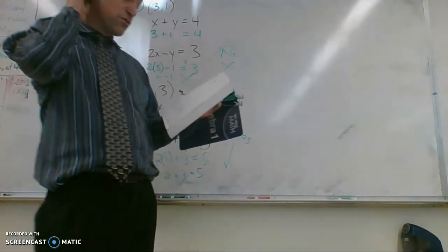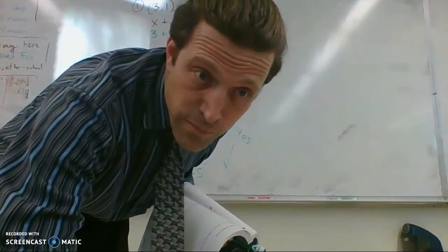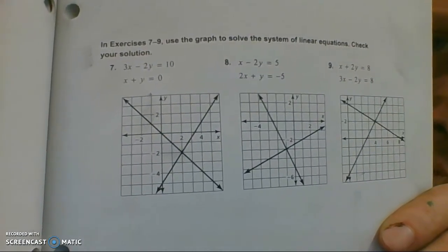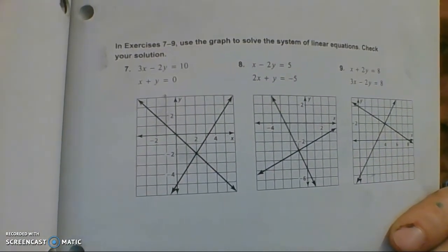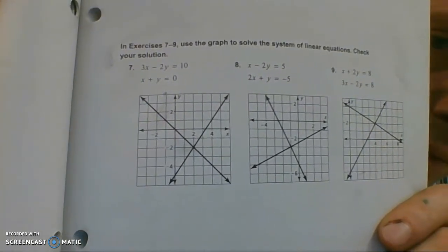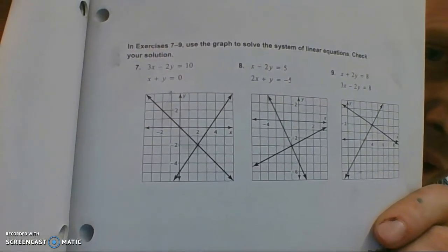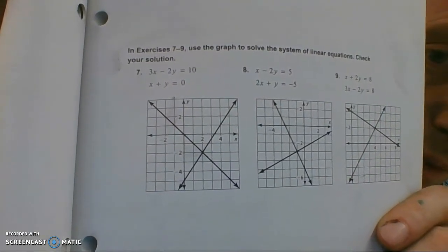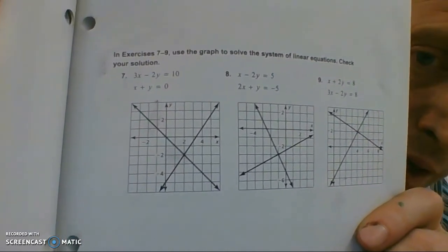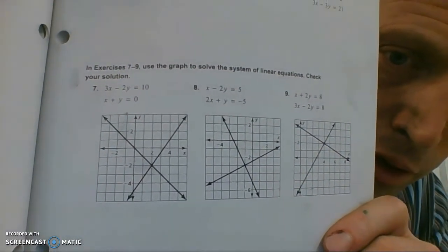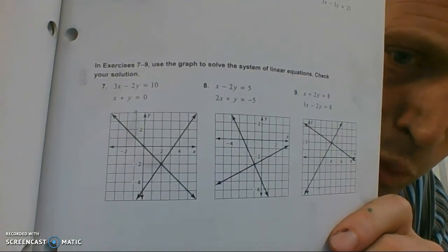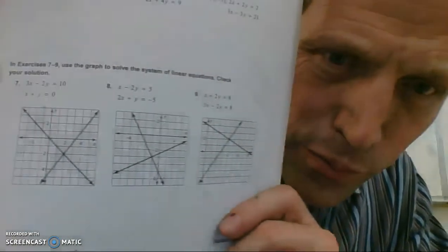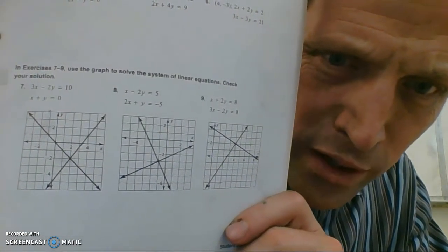All right, you guys can do 3 through 6 on your own, and then I'll see if I can help you with 7. All right, this is up close, but here, number 7, it says use the graph to find the solution. So the solution is where the lines intersect. So for number 7, it looks like x would be positive 2 and y would be negative 2. So 2 comma negative 2. For 8, we'd have x is negative 1 and y is negative 3. And for 9, we would have x is 4 and y is 2.